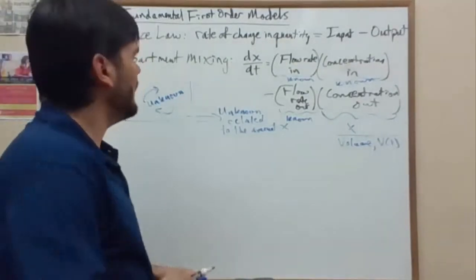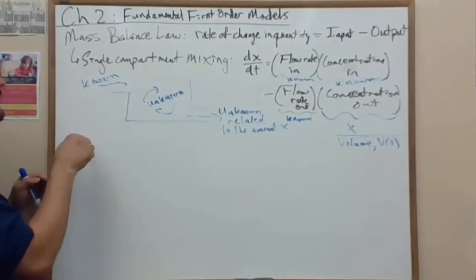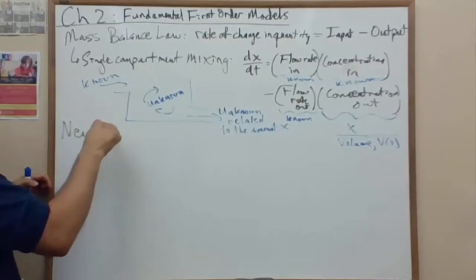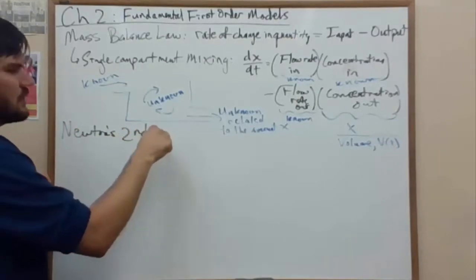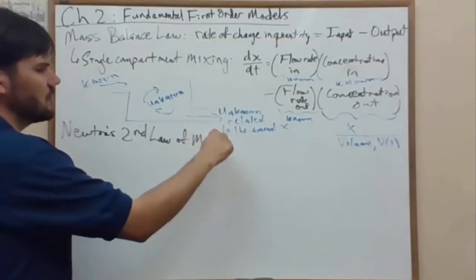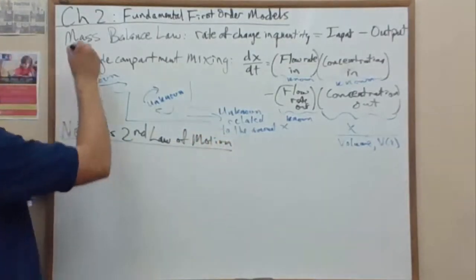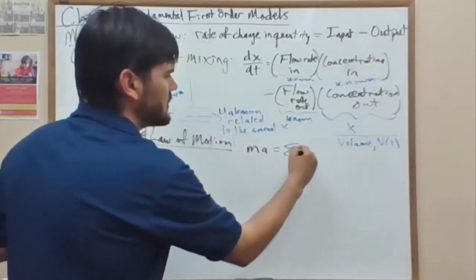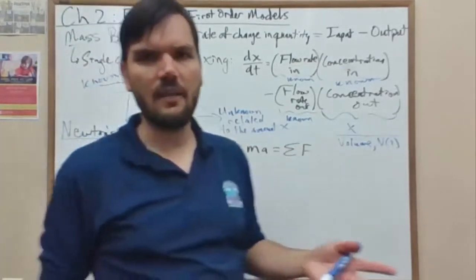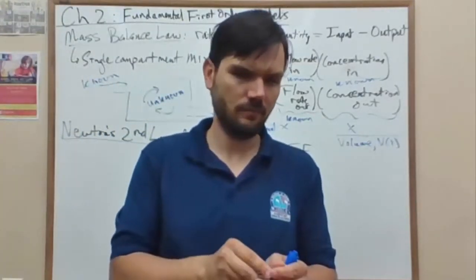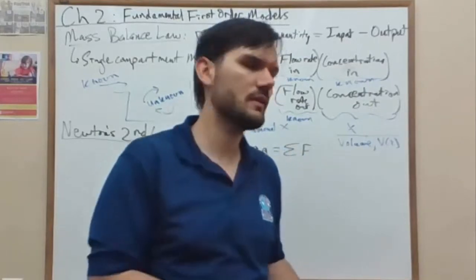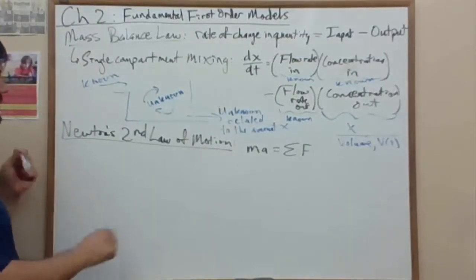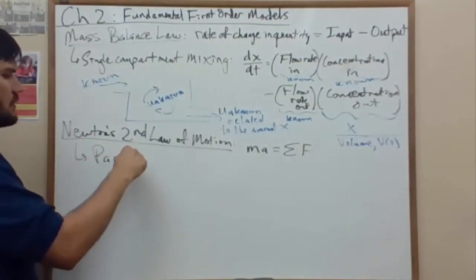Now let's look at the other main law that shows up in chapter two and also shows up in future chapters. That is Newton's second law of motion. And this is Ma equals the sum of the forces F. You can think of this as F equals Ma, but there's often more than one force. So Ma is equal to the sum of the forces.